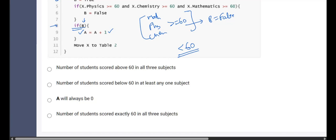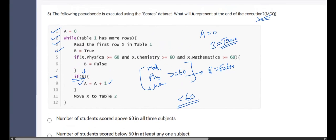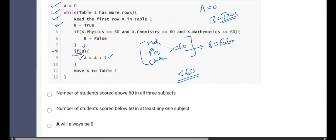They're asking us what will A represent? They will give us in A what we store is that if you noticed, we are using an AND operator here. That means if anyone is false, then the complete statement will be false. In this way, it will be number of students who scored below 60 in at least one subject, in at least any one subject. So option B is the correct answer for the fifth question.